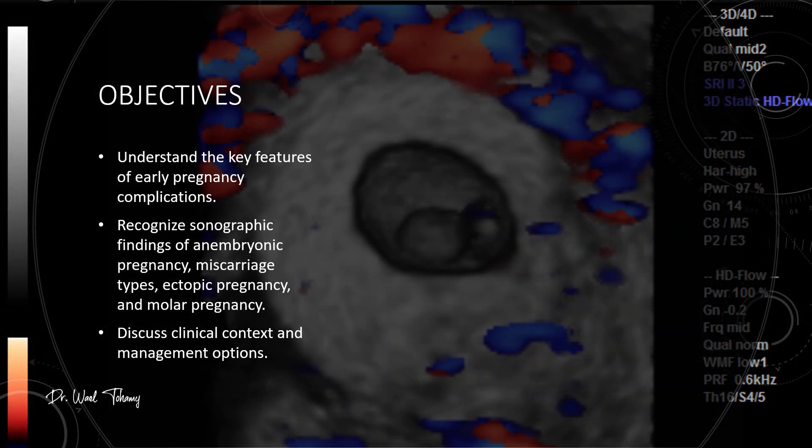By the end of this session, you will be able to spot the key features of early pregnancy complications, recognize the ultrasound findings of an anembryonic pregnancy, different types of miscarriage, ectopic pregnancy and molar pregnancy, and most importantly, understand the clinical context so you can choose the right management approach.